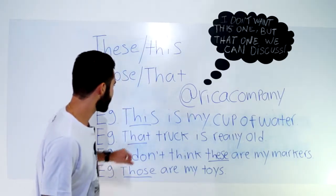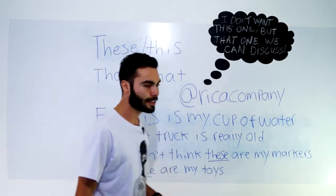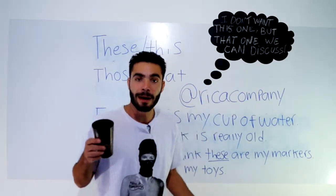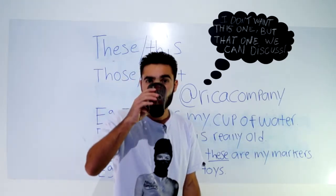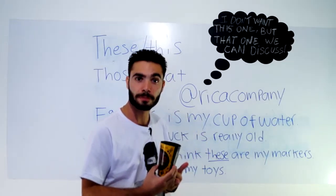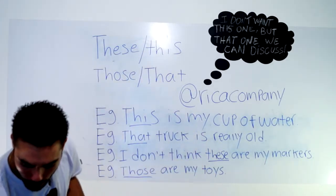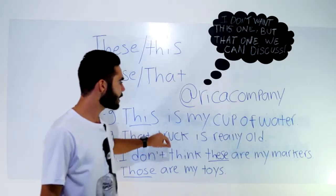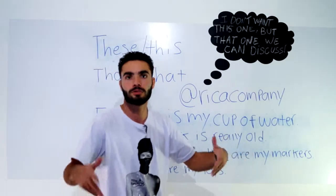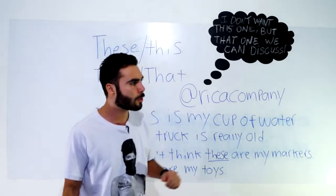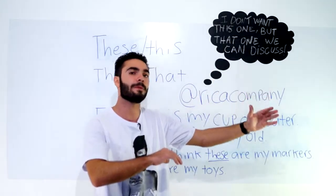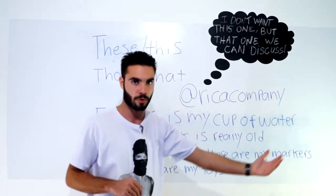Example number one: This is my cup of water. Então, estou tomando aqui um copo d'água — this is my cup of water. Por que this? Primeiro, porque eu tenho um copo d'água e ele está perto de mim. Example number two: That truck is really old. Vamos supor que eu estou na rua com meu colega e faço um comentário — that truck is really old. Aquele caminhão é muito velho. Se eu falar 'aquele caminhão', ele não está perto, ele está longe.